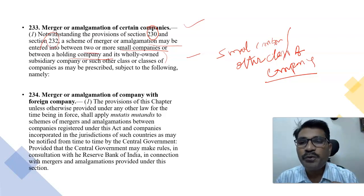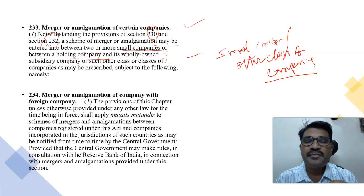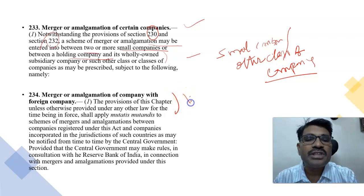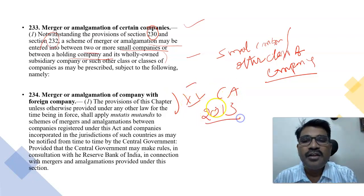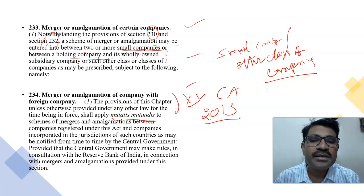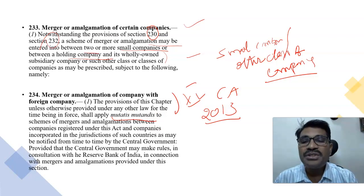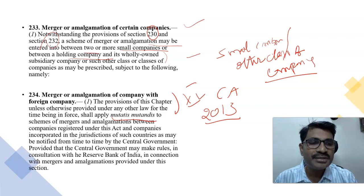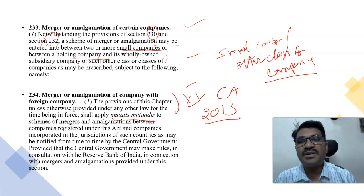Section 234 deals with merger or amalgamation of a company with a foreign company. The provisions of Chapter 15 of the Companies Act 2013 will apply mutatis mutandis — that means equally — so the merger provisions also apply to companies with foreign merger implications, i.e., foreign mergers or companies which have implications of foreign mergers.